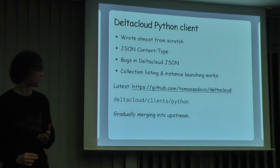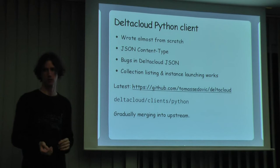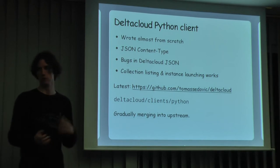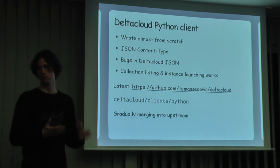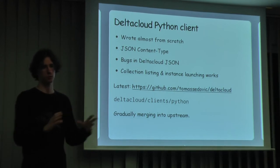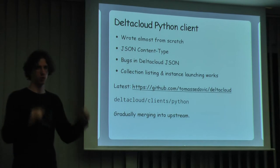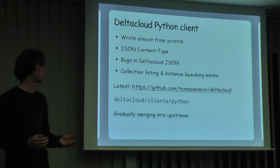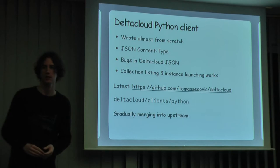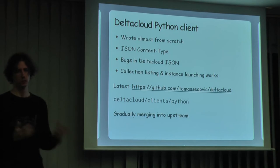The DeltaCloud Python client is on GitHub. Some of it has been contributed back to DeltaCloud core, though not all of it - we plan to get it upstream soon. The main point of the proof of concept was to get something working quickly, and we'd figure out the upstream stuff properly later. We wrote it almost from scratch. There was a small Python library that talked to DeltaCloud, but it hadn't been updated in a year and didn't work.